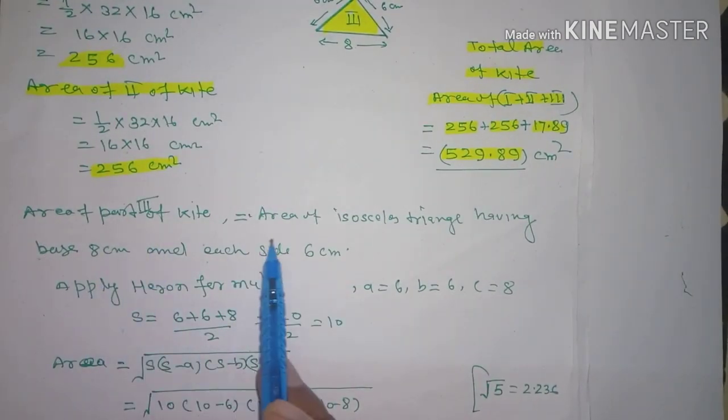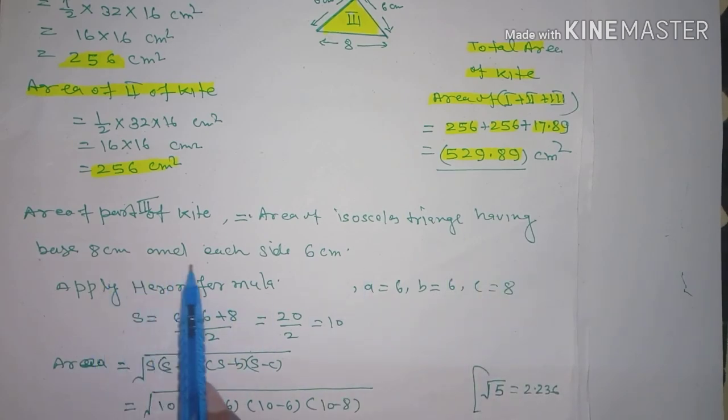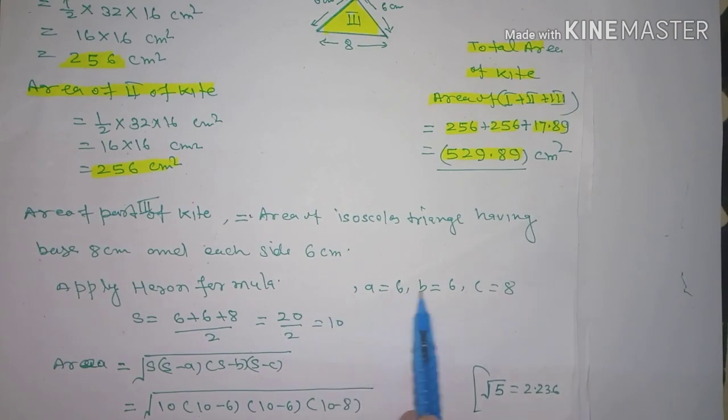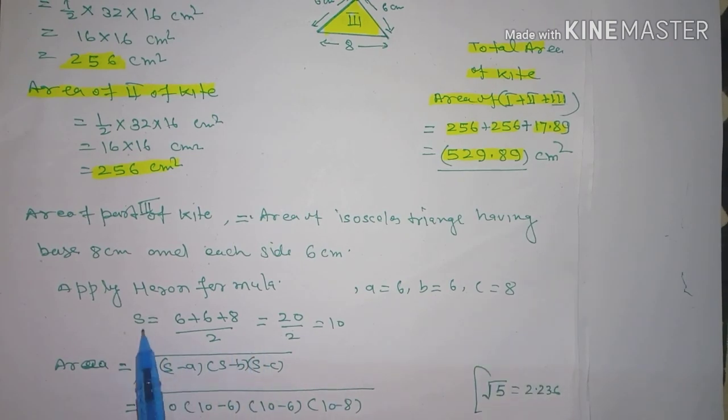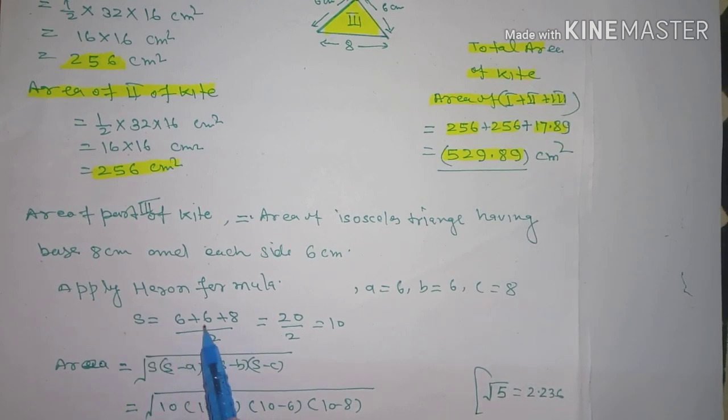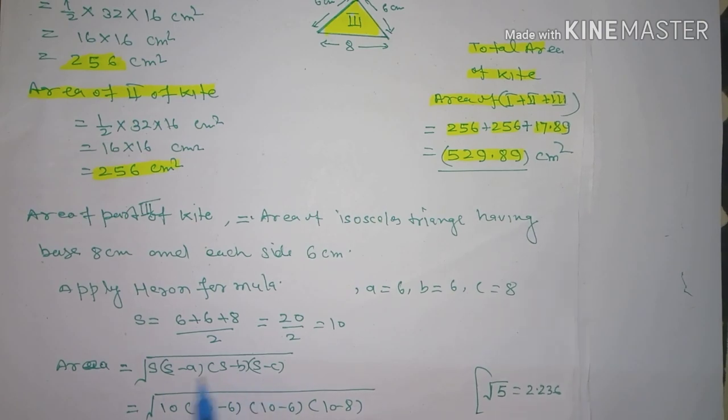Area of the third part of kite is equal to isosceles triangle having base 8 cm and each side 6 cm. Here we'll apply Heron's formula. A = 6, B = 6, C = 8. Perimeter s = (6 + 6 + 8) / 2 = 10. Formula: Area = √[s(s-a)(s-b)(s-c)]